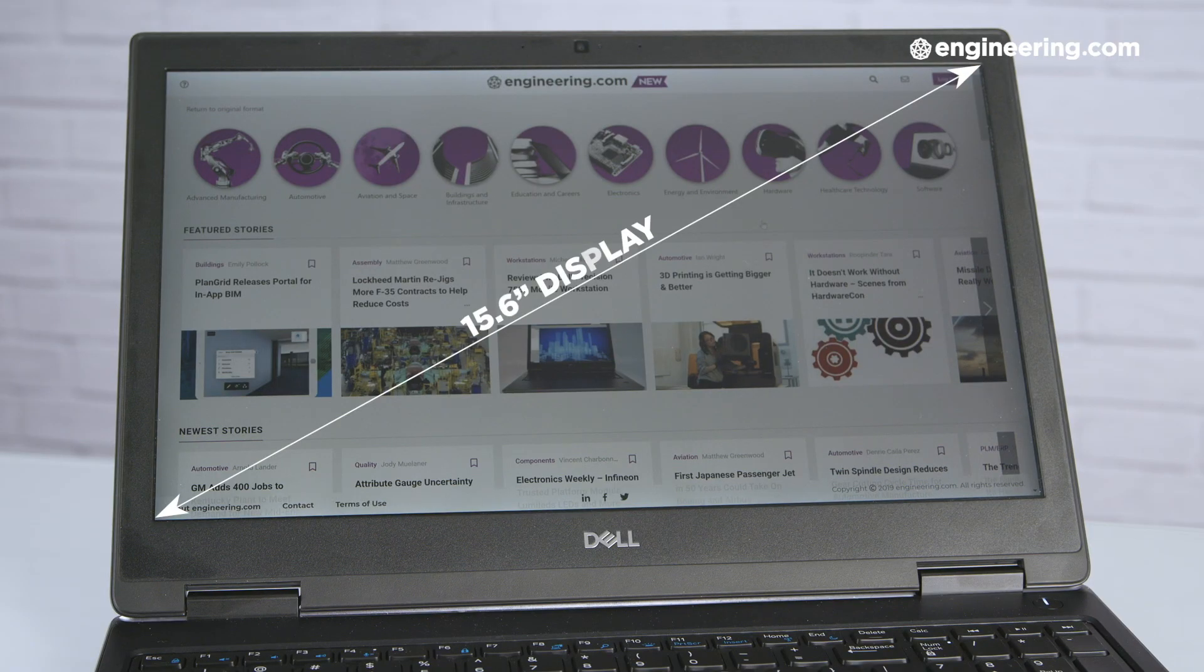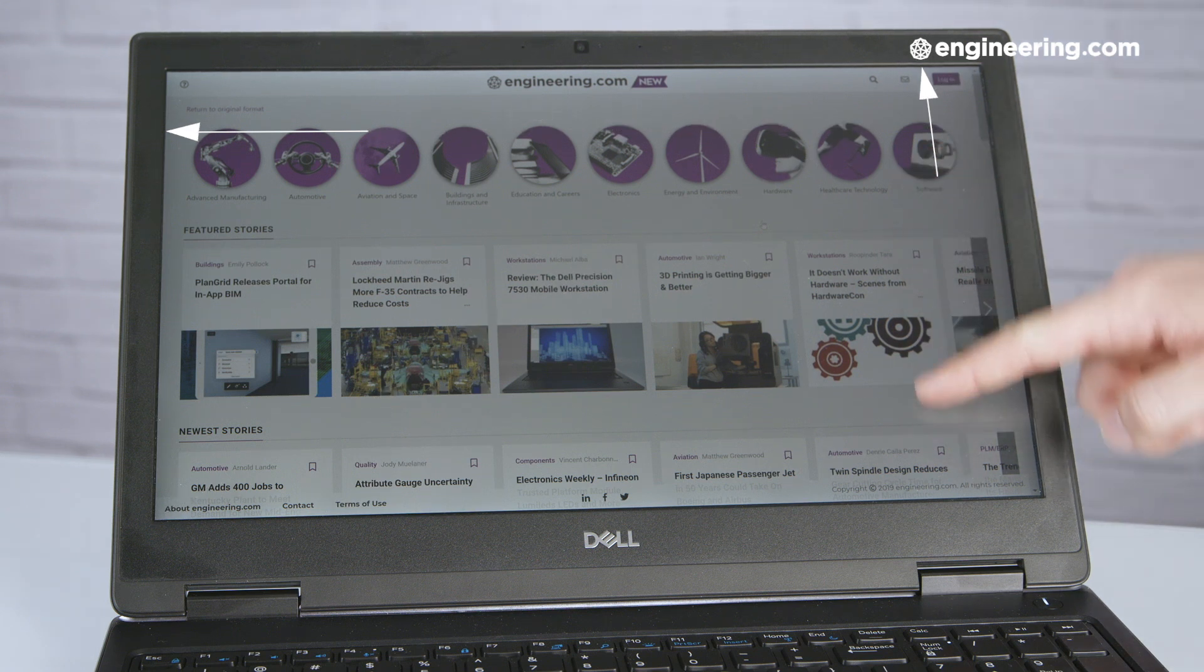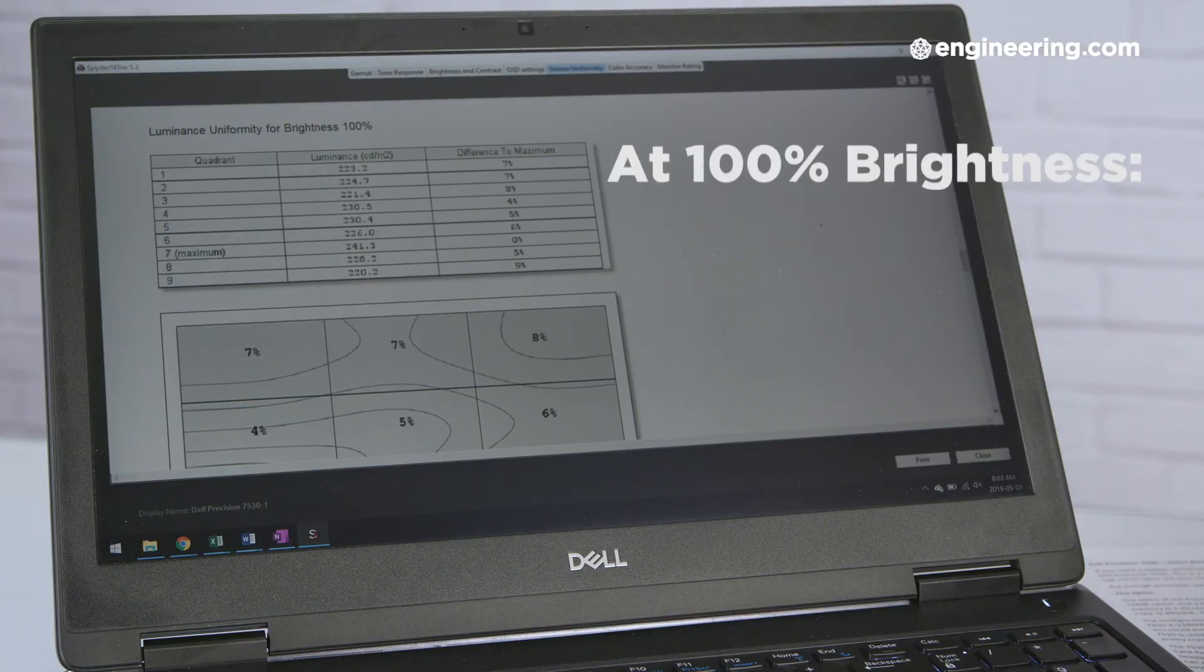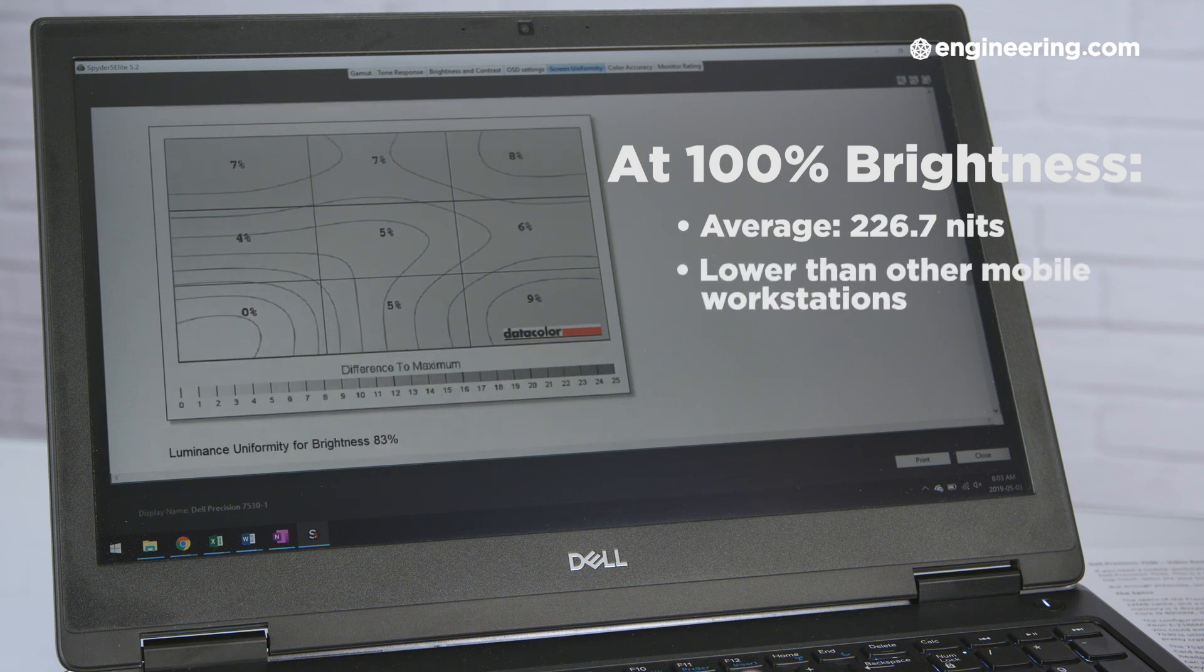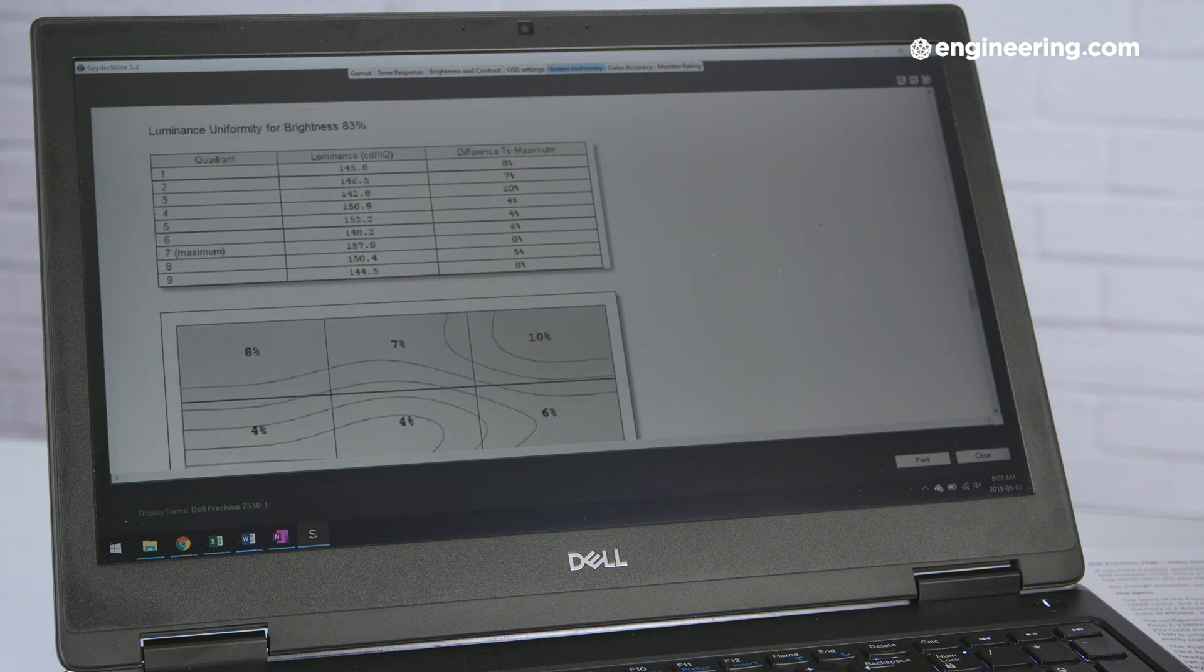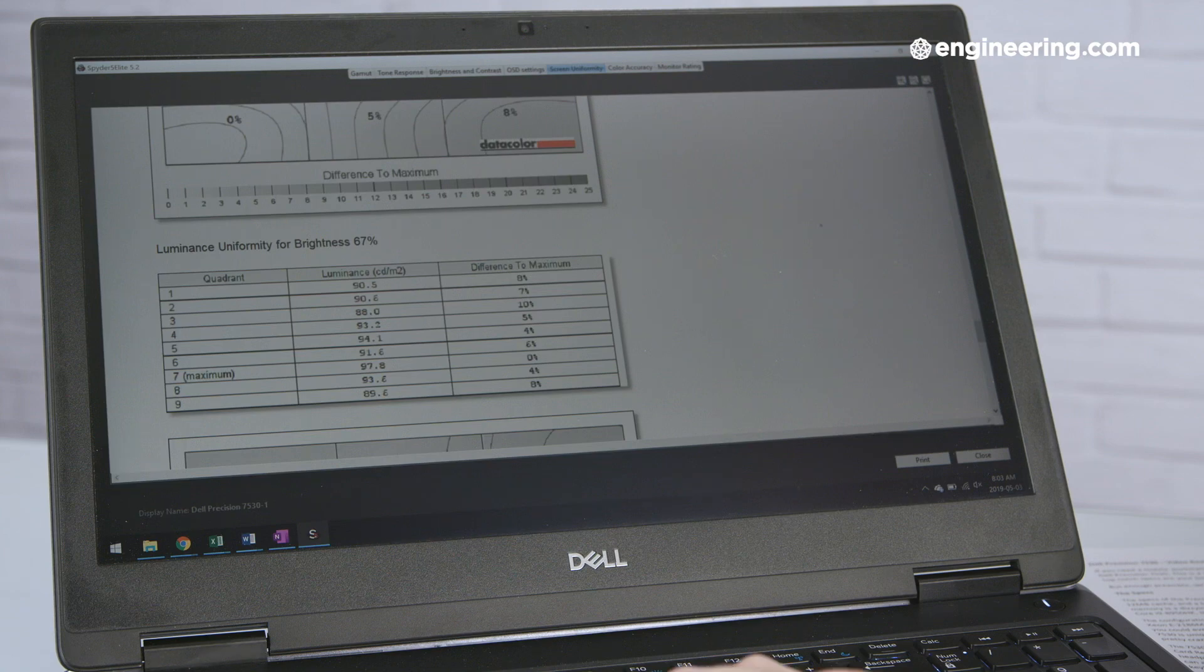Our 7530 review unit had a 15.6-inch 3840x2160 display, which had a few shortcomings. For one, it's not a touchscreen. If you want a touchscreen with the 7530, you have to step down to the 1080p display option. That's a trade-off that doesn't really feel necessary, but that's the way it is. The display we had was also on the dim side, with an average 100% brightness of 226.7 nits. That's lower than other workstations we've looked at, but it was never a problem for me. But it is.